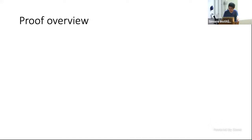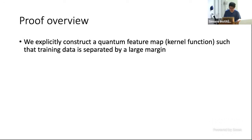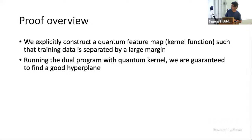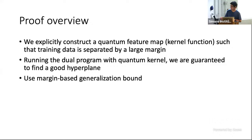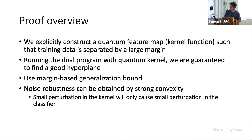Using this tool, we can go through the proof of quantum advantage. First, we explicitly construct a quantum feature map, or kernel function, that maps classical data to a very high-dimensional feature space, and crucially show that the training data is separated by a large margin by this feature map. Next, we run the dual program using this quantum kernel and are guaranteed to find a good hyperplane. Then, using the margin-based generalization bound, we guarantee high accuracy when testing this classifier. Along the way, we address noise robustness via strong convexity: small perturbations in the kernel cause only small perturbations in the classifier, and the large margin protects the classifier from these perturbations.